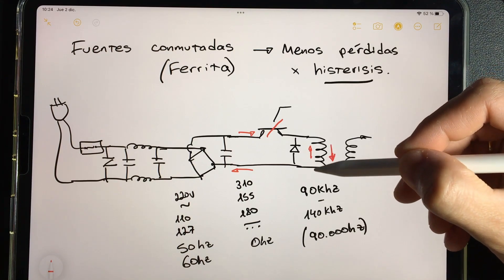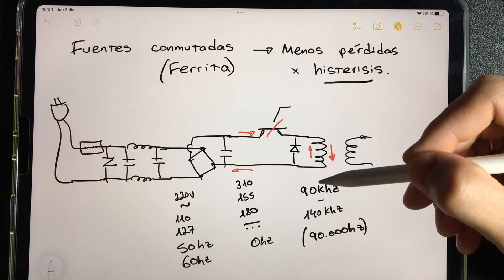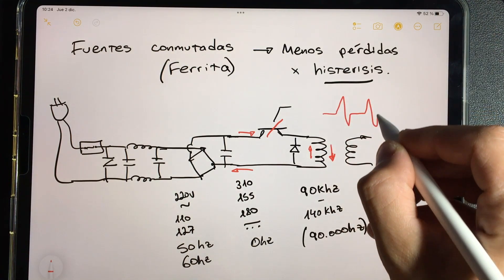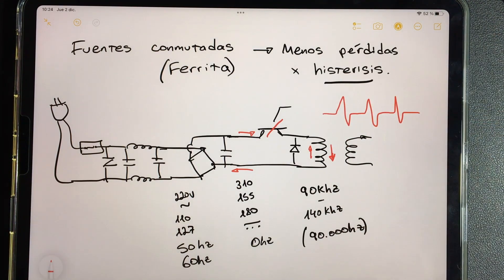Thanks to that, you constantly have inputs, outputs, inputs, outputs of electrons, and a kind of alternating current is produced but with a very high frequency, a frequency of 90,000 to 140,000 times per second.